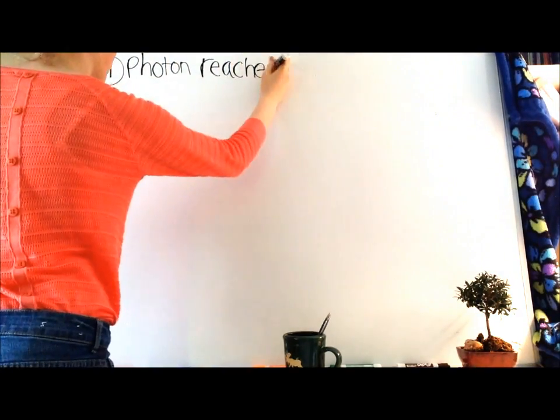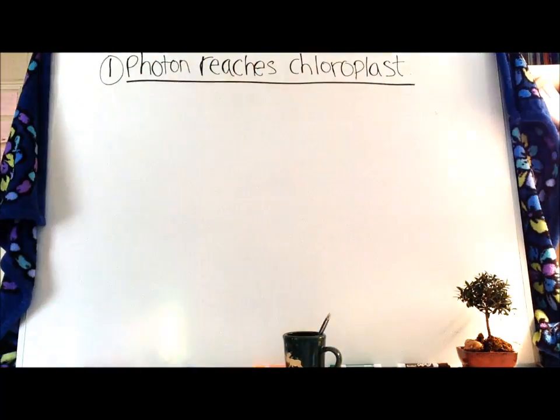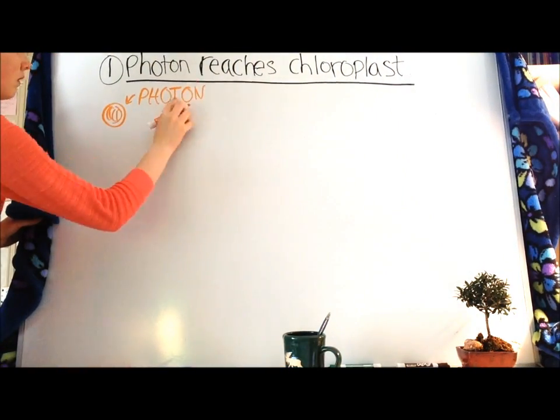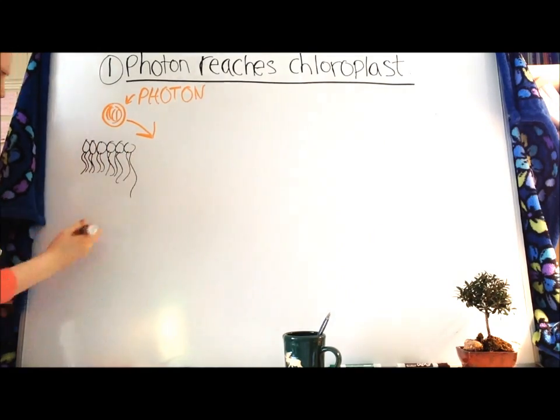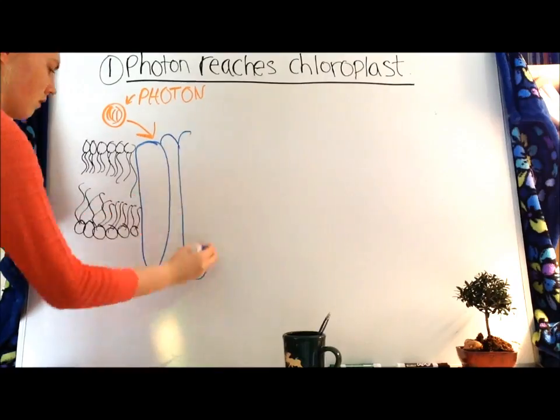Now let's start with step one, photon reaches chloroplast. It all starts here with a photon, all the way from the sun, 94.5 million miles away, to find itself here in the thylakoid membrane.